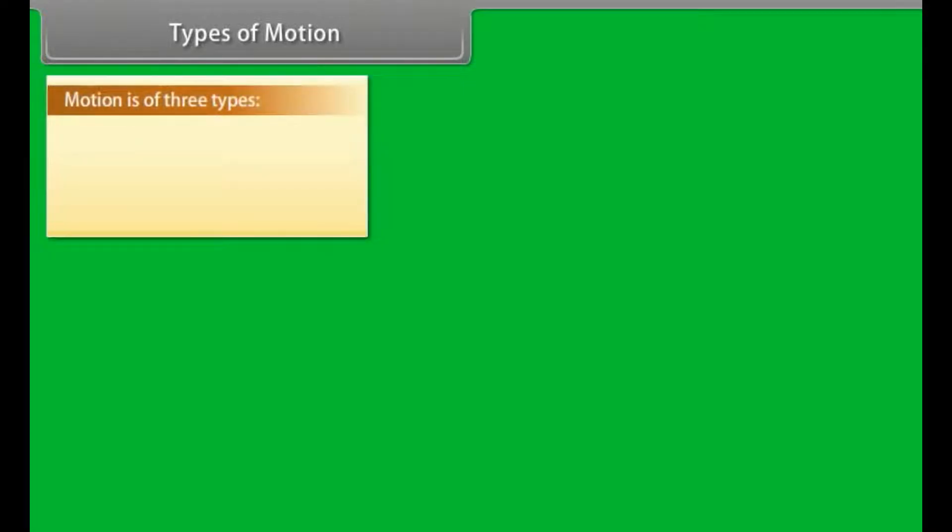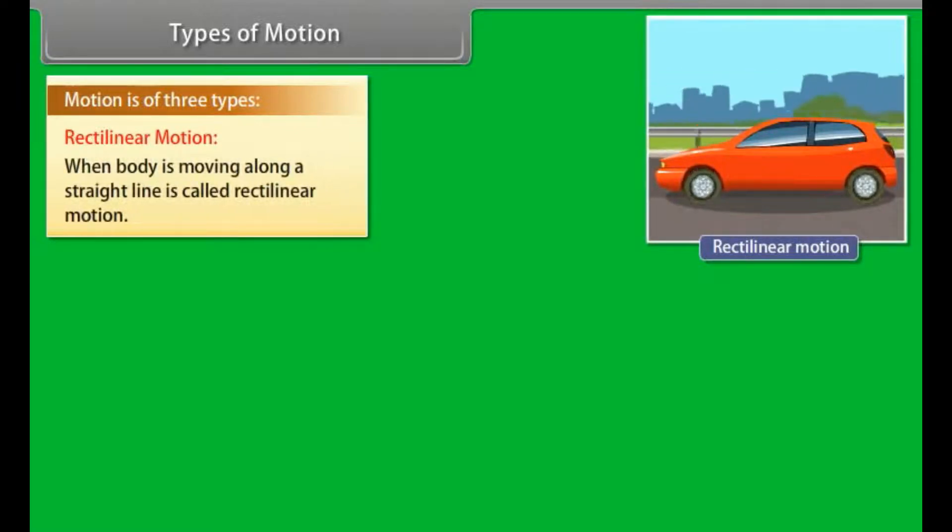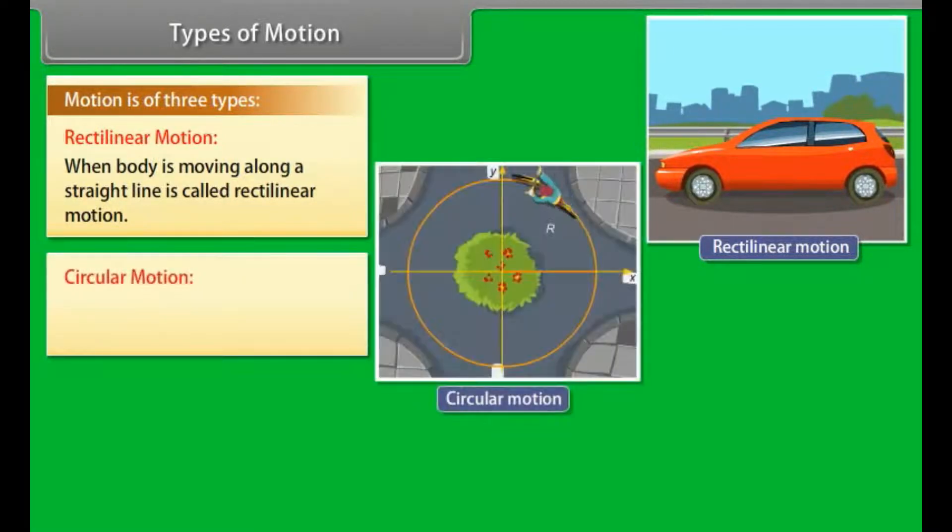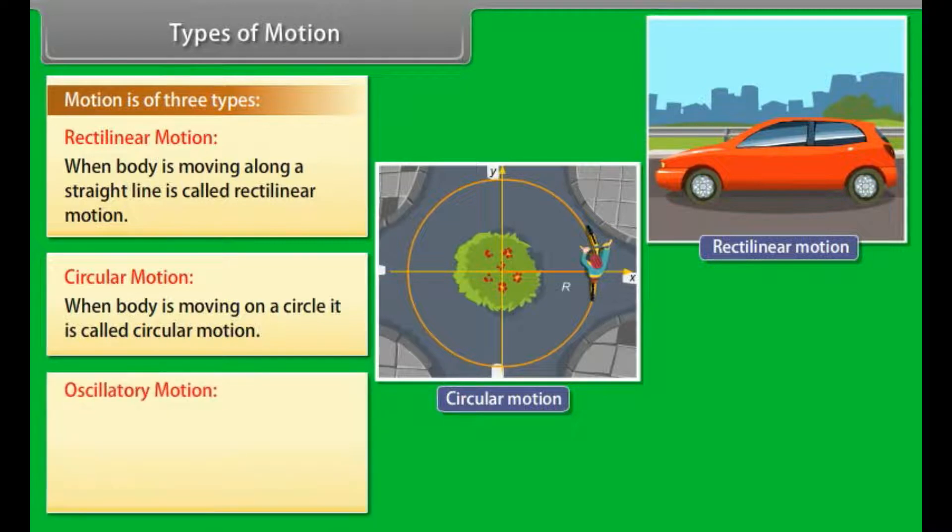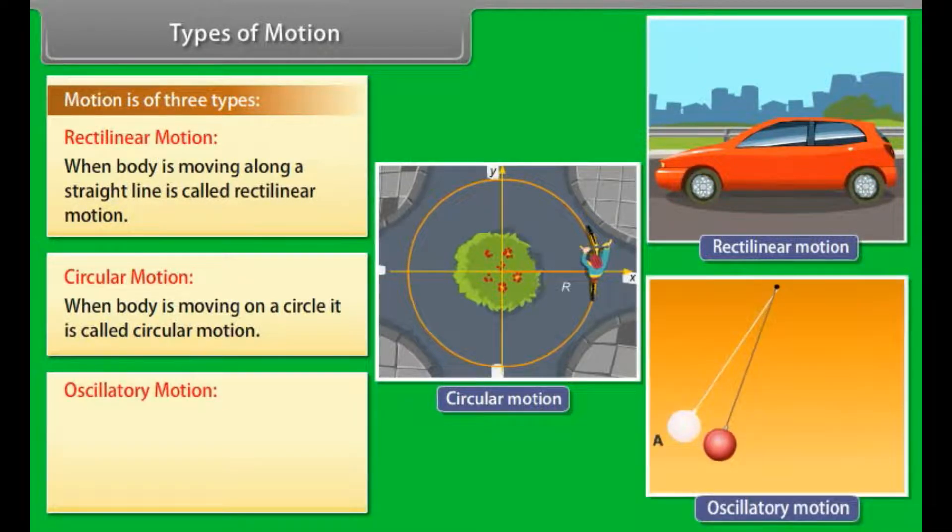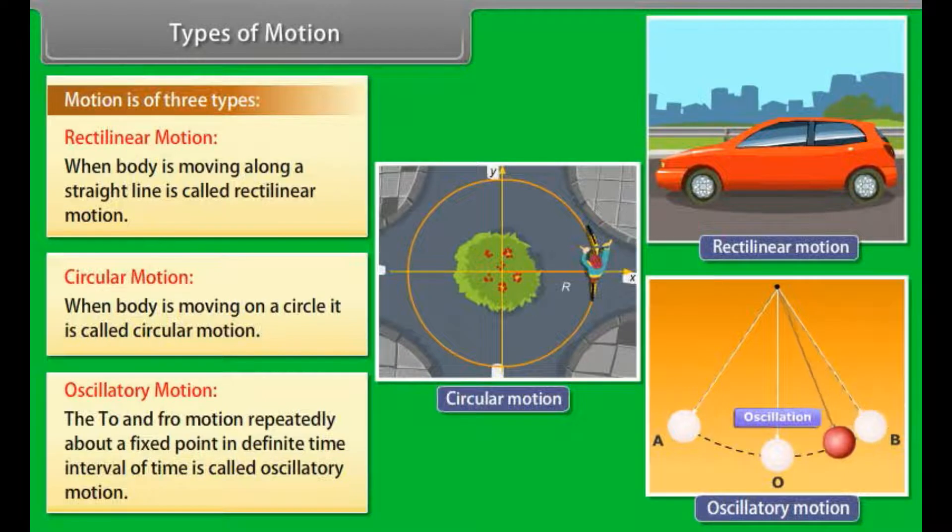Types of Motion. Motion is of three types. 1. Rectilinear motion: When body is moving along a straight line is called rectilinear motion. 2. Circular motion: When body is moving on a circle it is called circular motion. 3. Oscillatory motion: The to and fro motion repeatedly about a fixed point in definite time interval of time is called oscillatory motion.